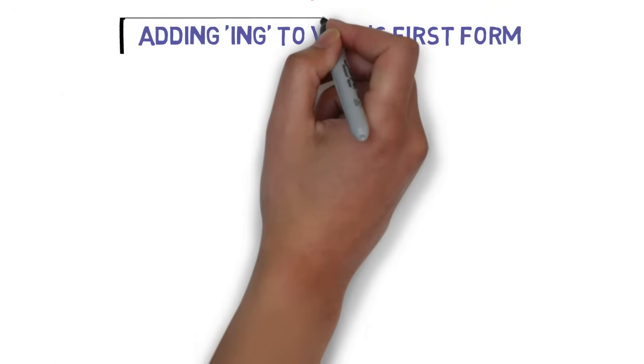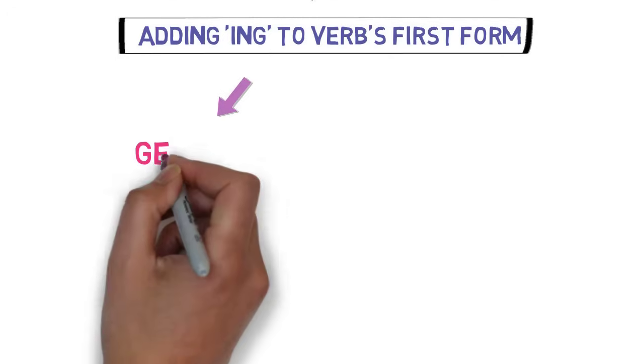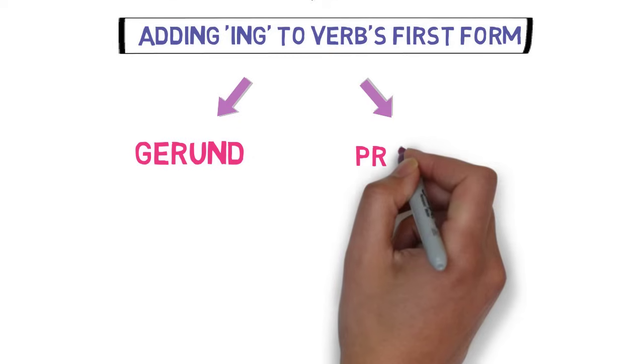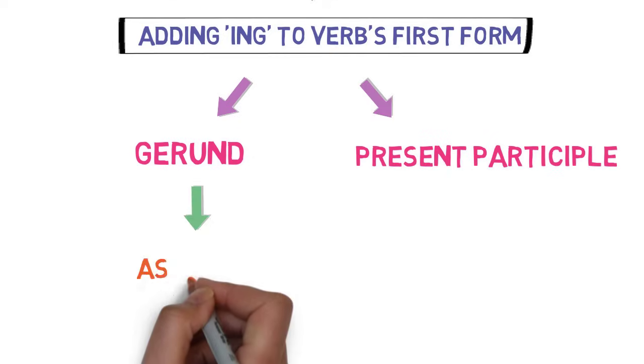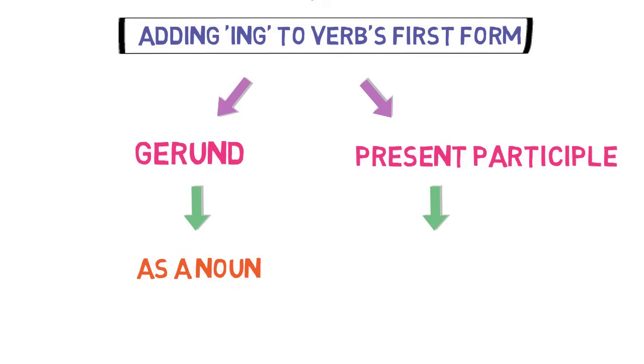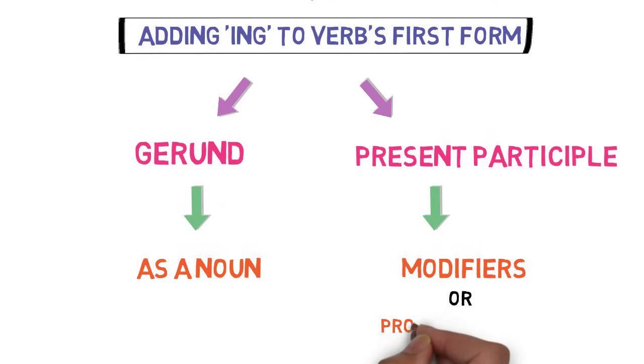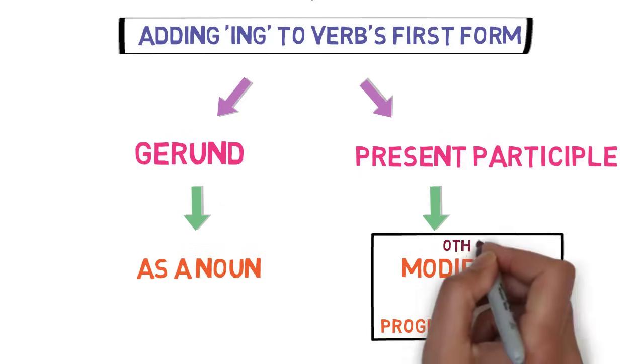Remember this, verb's ing form can be used in two ways. First, gerund and second, present participle form. In gerund, we use this form as a noun, while in present participle, we use it as a modifier or progressive verb.